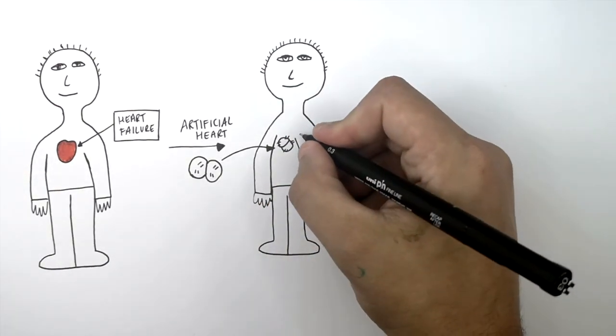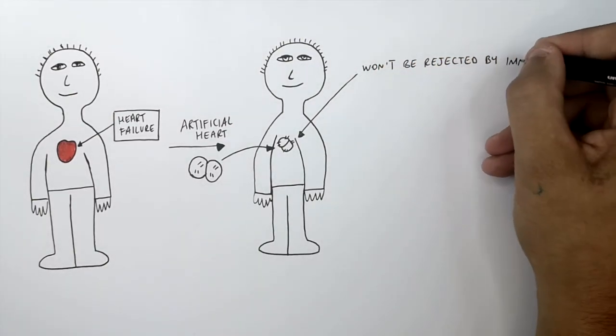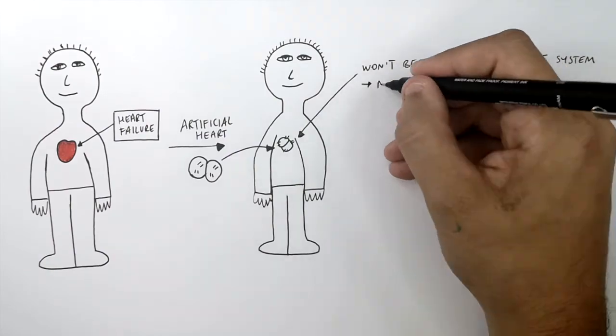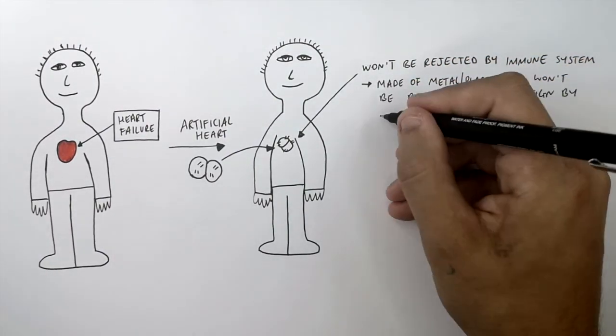Because it's made of plastic and metal and not real cells, it won't be rejected by the person's immune system. Because it's made of plastic and metal, it won't be recognized as foreign by the immune system.